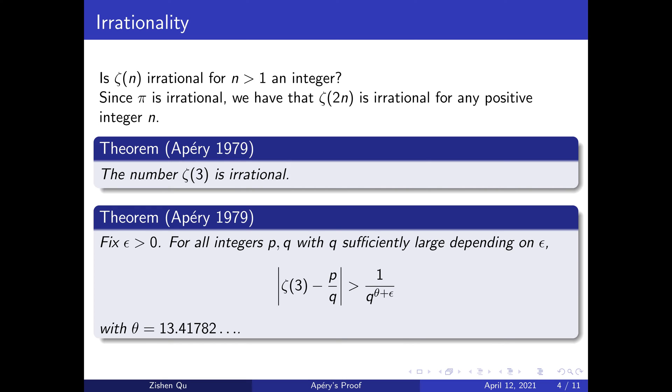More precisely, for a fixed ε, p/q with q sufficiently large depending on ε, the distance between ζ(3) and p/q is more than 1/q^(θ+ε), where θ is around 13.4178.